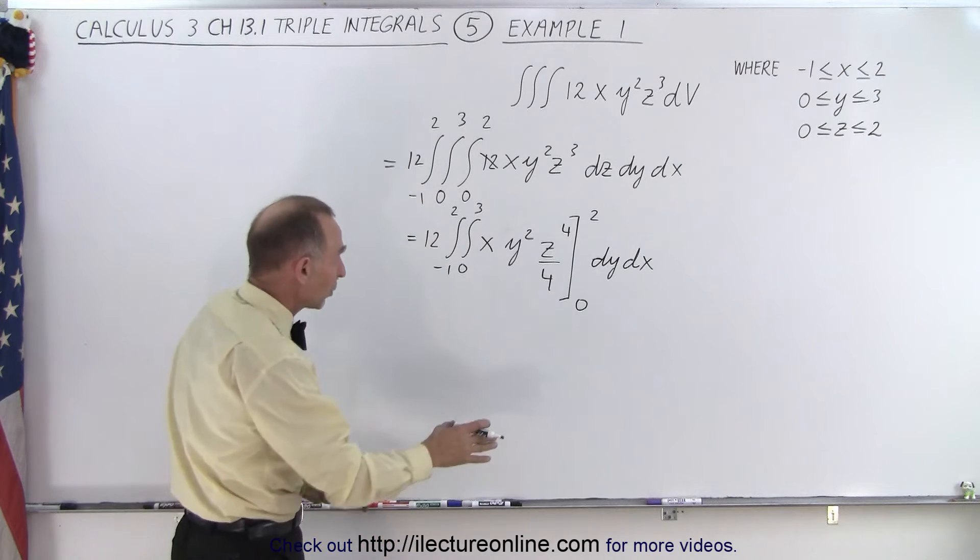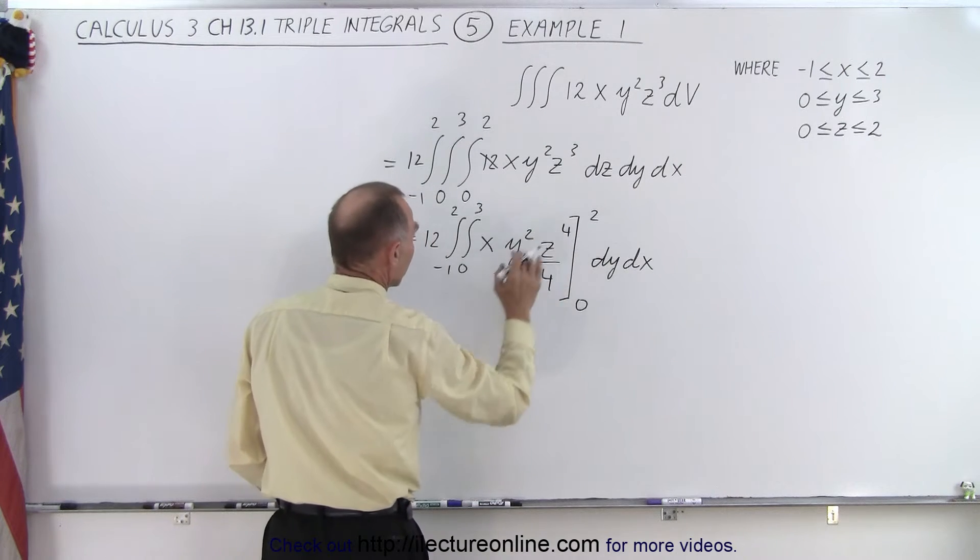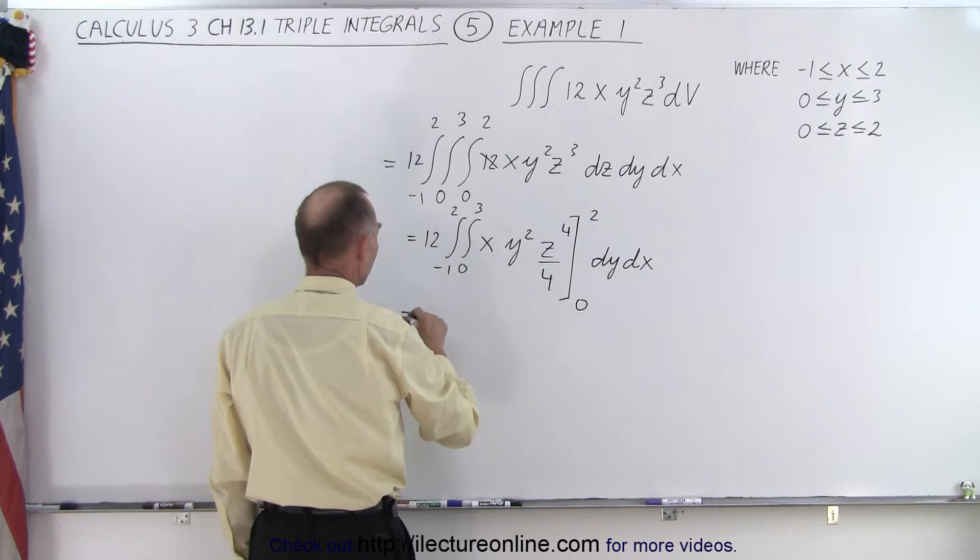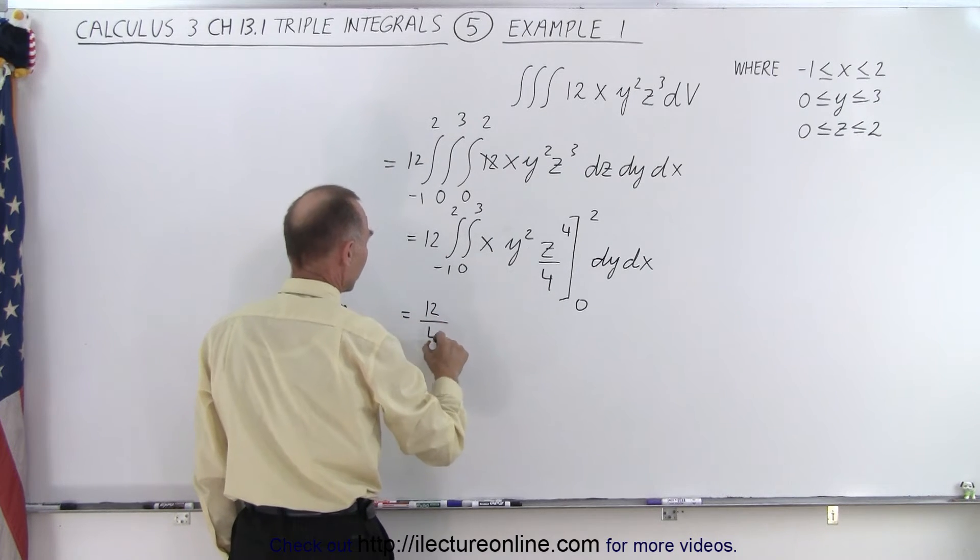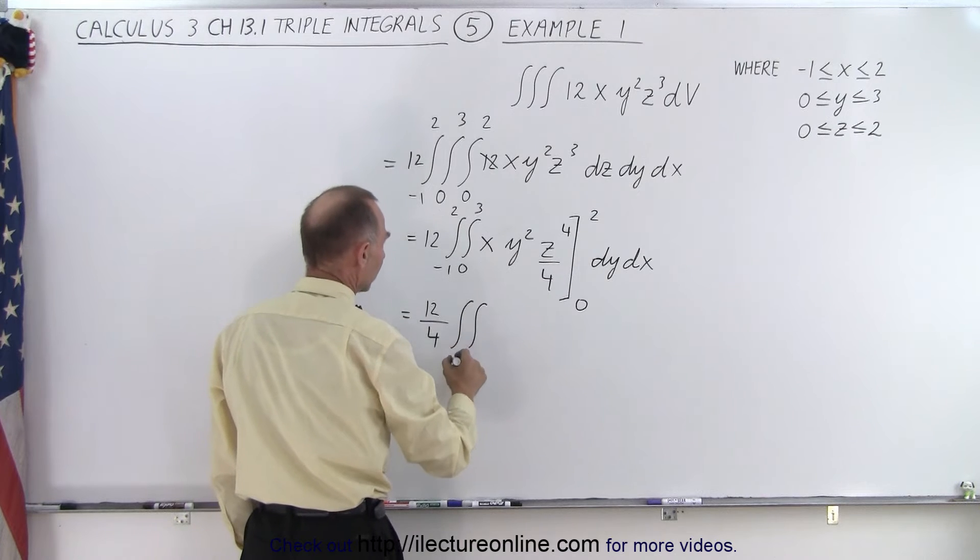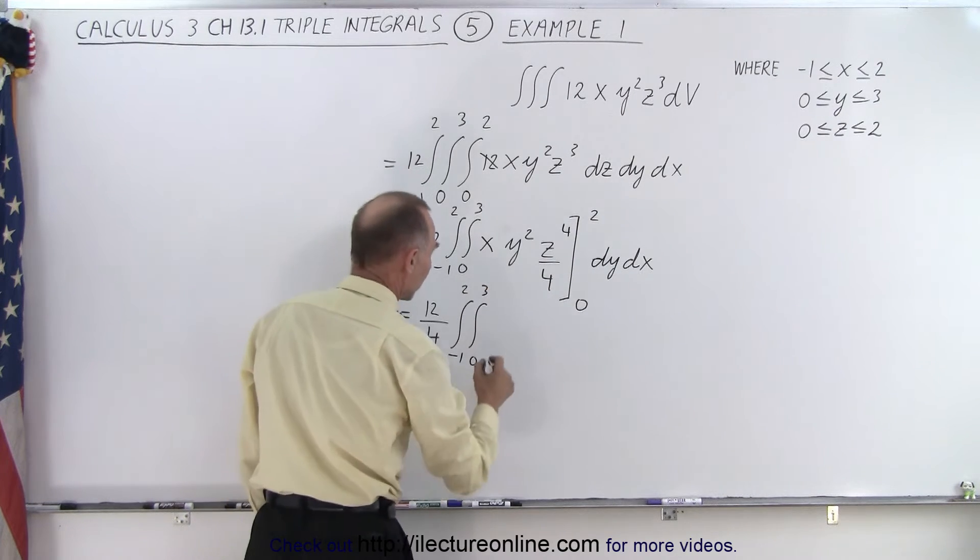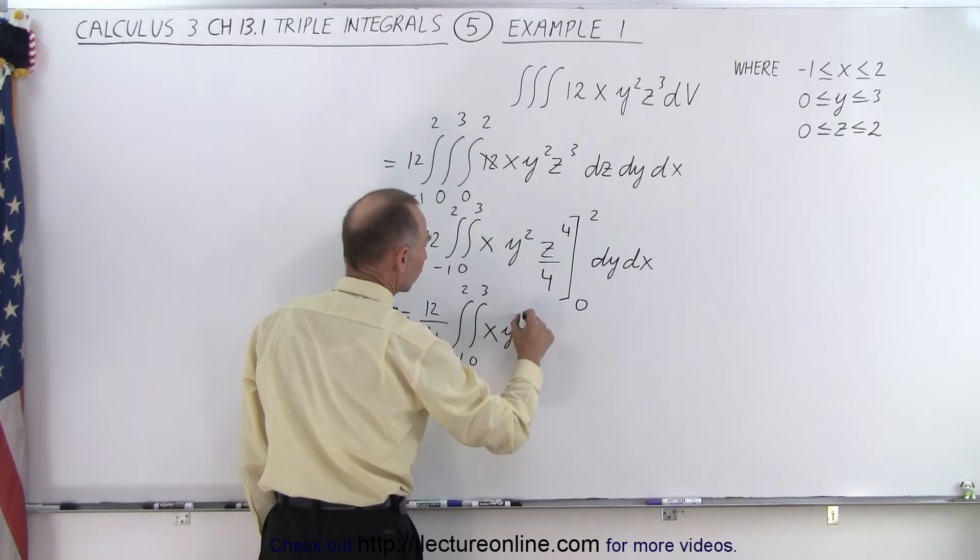Of course when we plug in the lower limit we'll get zero. Plug in the upper limit we get the following. So first let's bring the four out. So this becomes 12 divided by 4 times the double integral from -1 to 2, from 0 to 3, and we end up with xy².